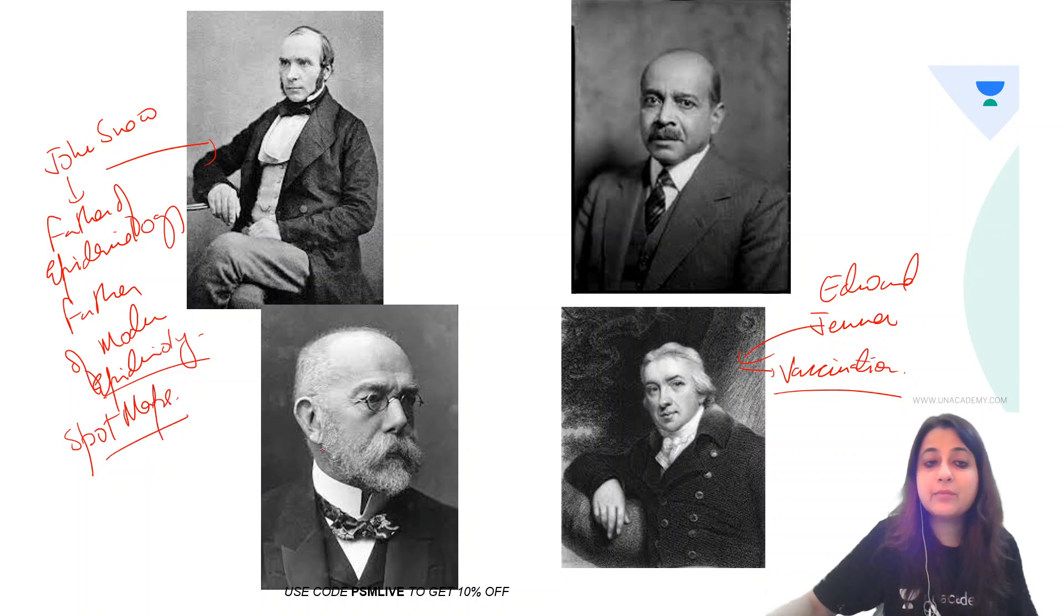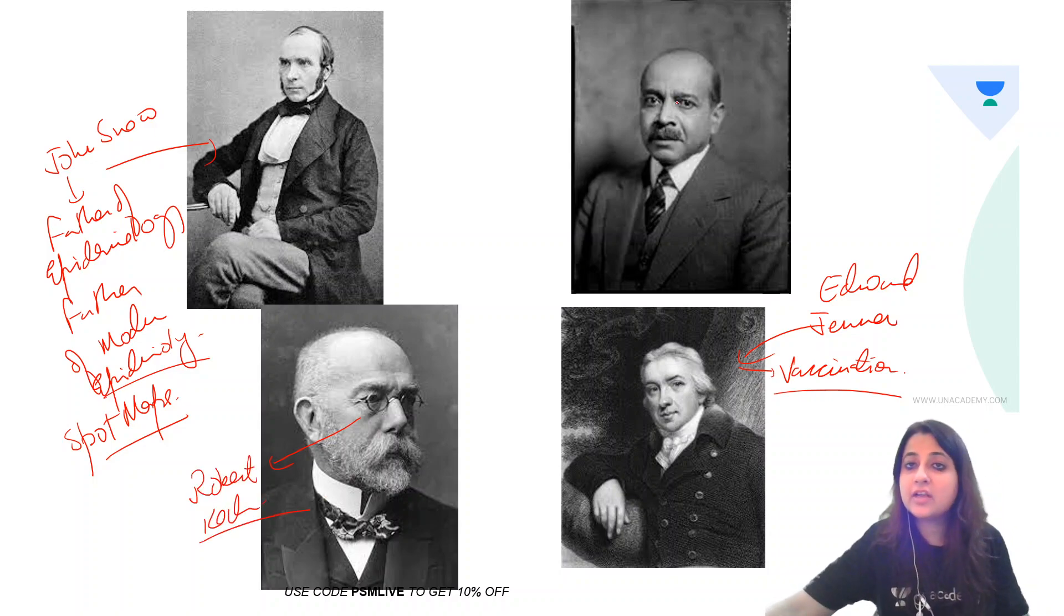Who is this one with the specs? This is Robert Koch. He gave us the Koch postulate. And last, this is Sir Joseph Bhore. So let us have a look at what all Sir Joseph Bhore did.